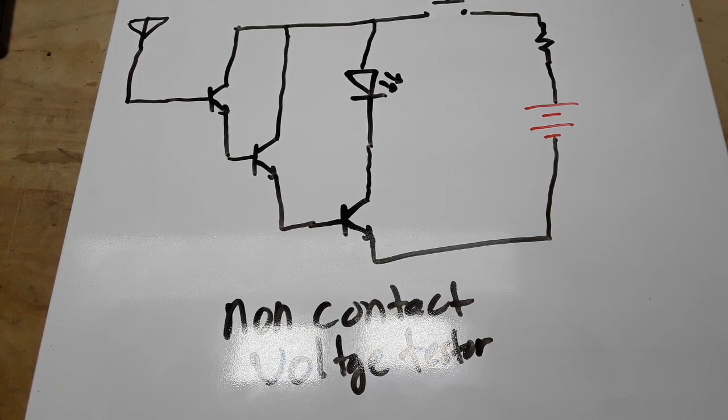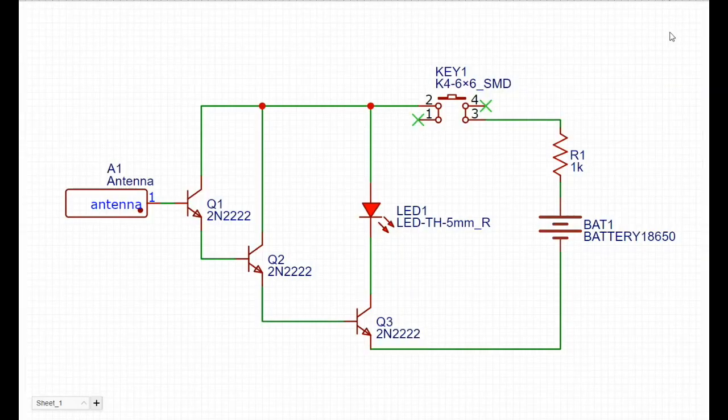So let's go over to the computer, we'll draw it up, we'll design it, and we'll get a PCB made. So here's the circuit I just drew on the whiteboard for you. The battery, resistor, switch. Then we have these three transistors acting as one, picking up the signal from the antenna, multiplying it, and creating enough current to light up that LED.